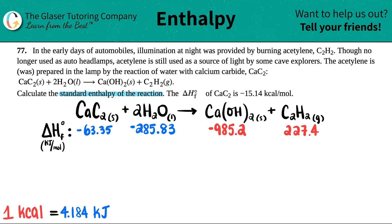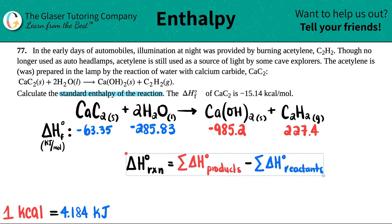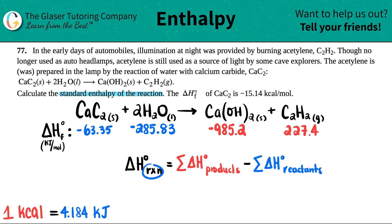It's this one. It's just products minus reactants. Maybe I'll just put it over here. So the delta H for the whole reaction, Rxn, is the sum of all the products delta H minus the sum of all the reactants delta H.